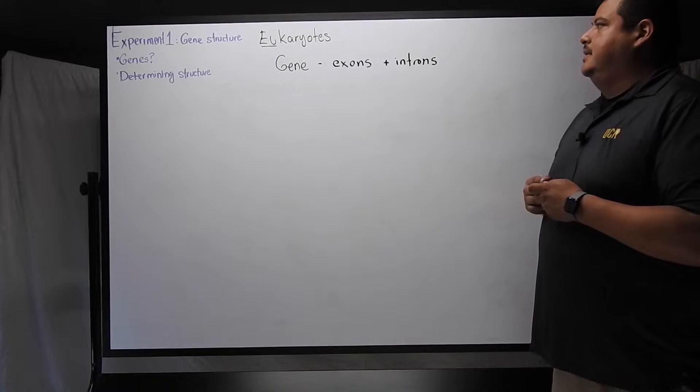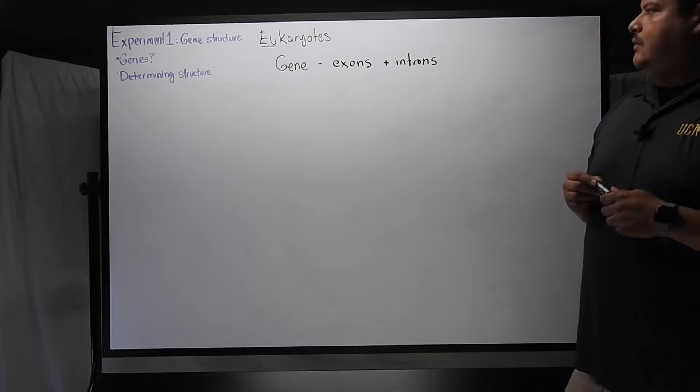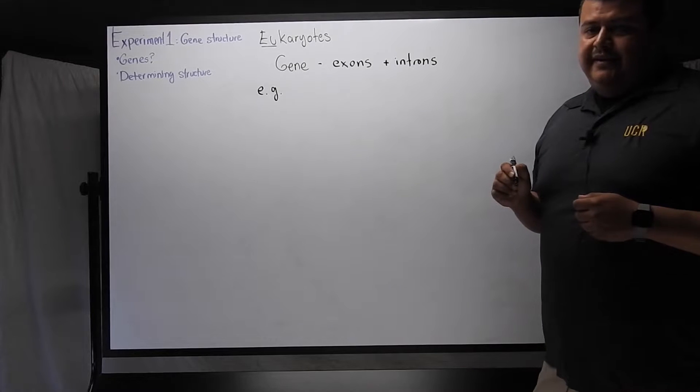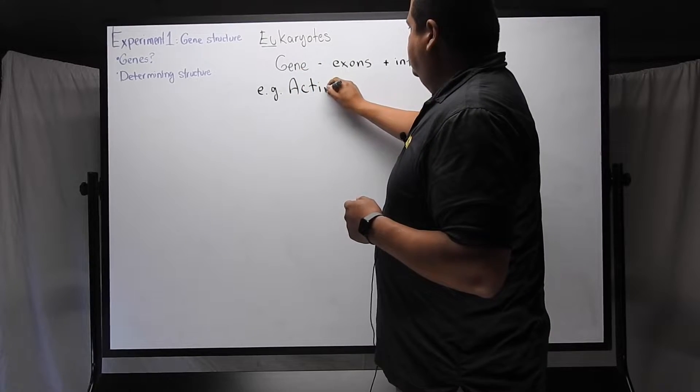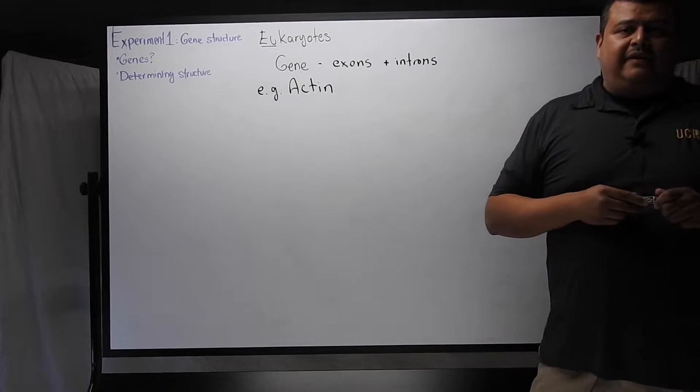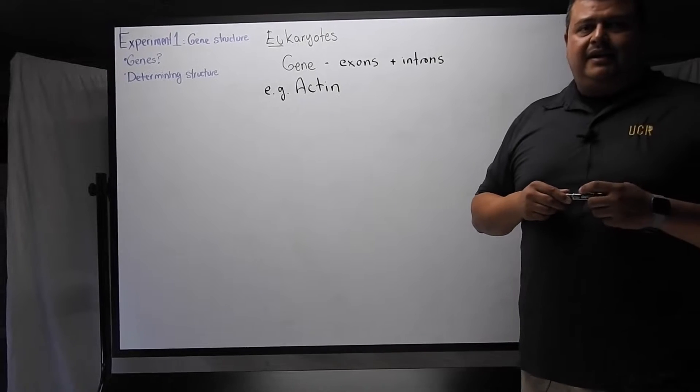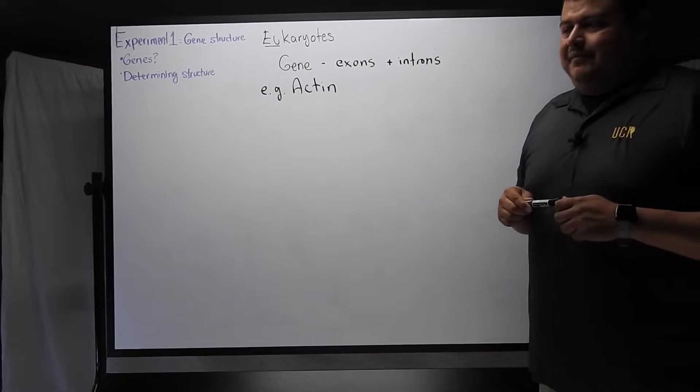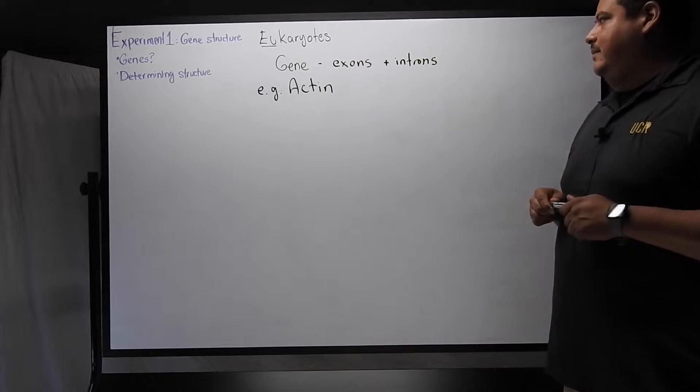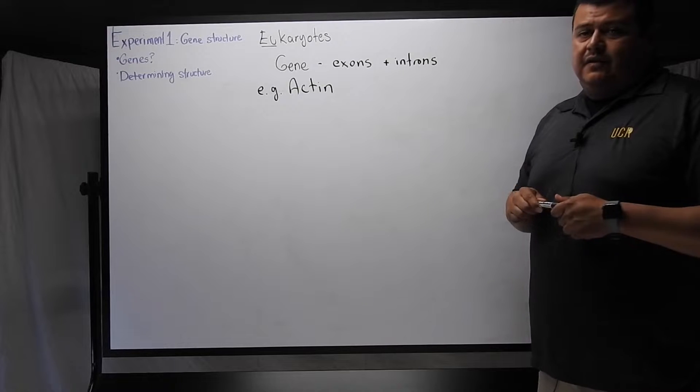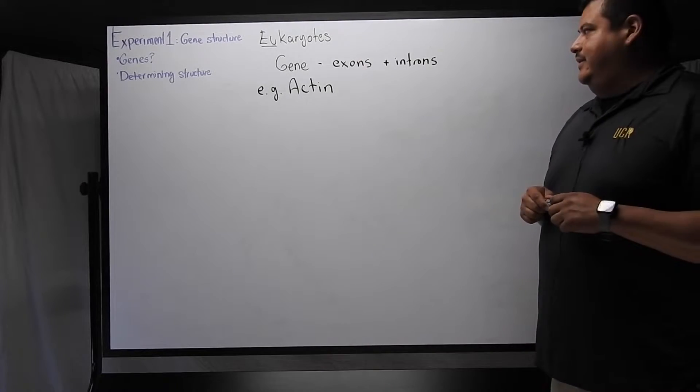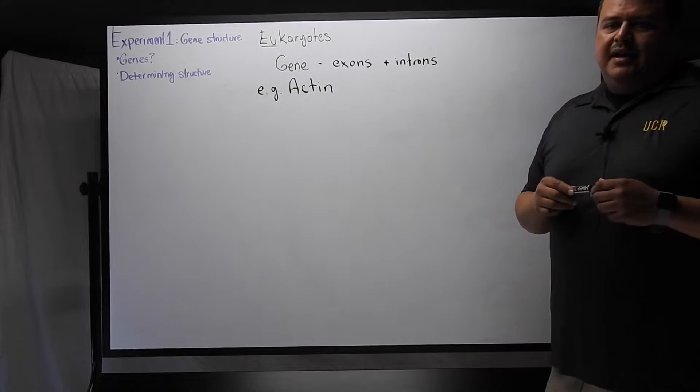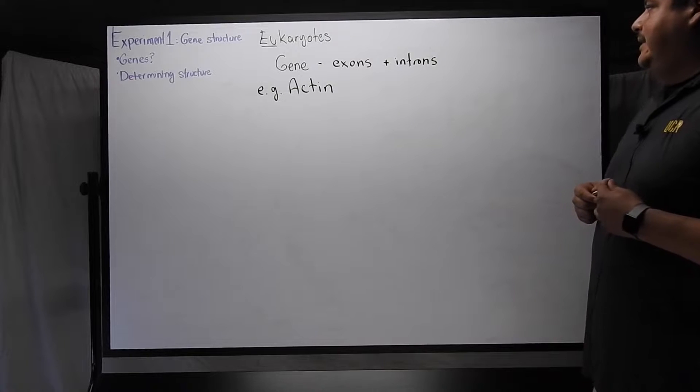So in experiment one, we should think about what we're going to use as our example is the actin gene. The actin gene codes for actin protein. This protein assembles into many structural components in the cell. You're going to learn more about it in other courses, particularly in upper division courses that talk about the cytoskeleton and cell division.